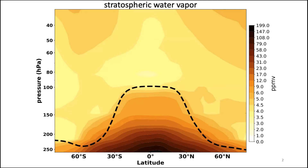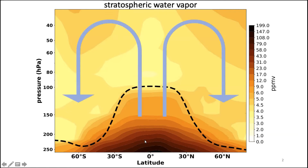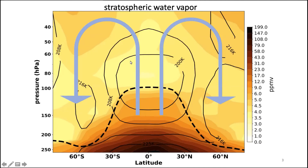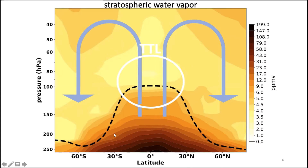Why is there very little water vapor in the stratosphere? Air is transported from the troposphere to the stratosphere following the Brewer-Dobson circulation — upward in the tropics, then poleward and downward at higher latitudes. As air passes through the tropopause in the tropics, it goes through the tropical tropopause layer, or TTL, which has very low temperatures. Water vapor condenses to the saturation mixing ratio corresponding to these low temperatures, so TTL temperatures determine the amount of water vapor entering the stratosphere.